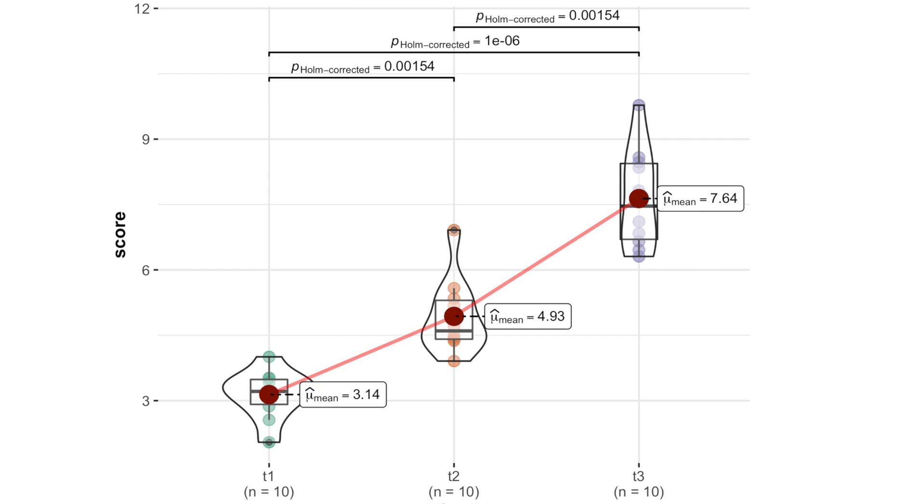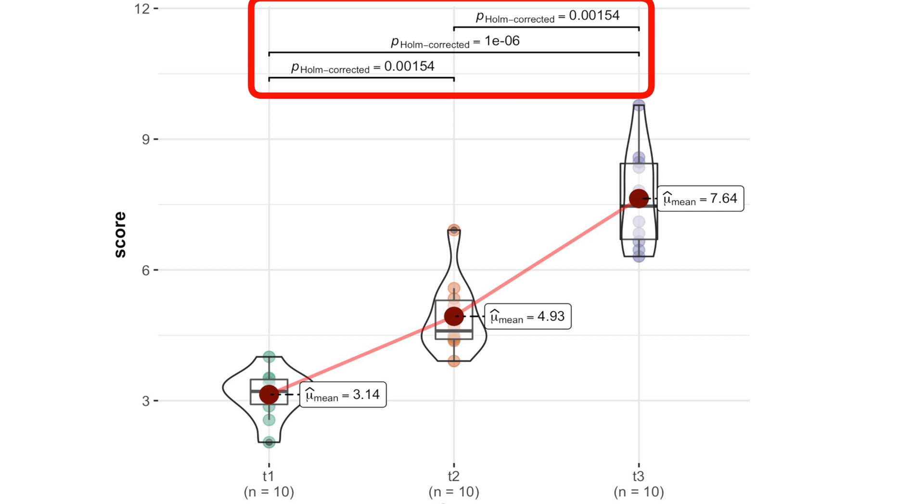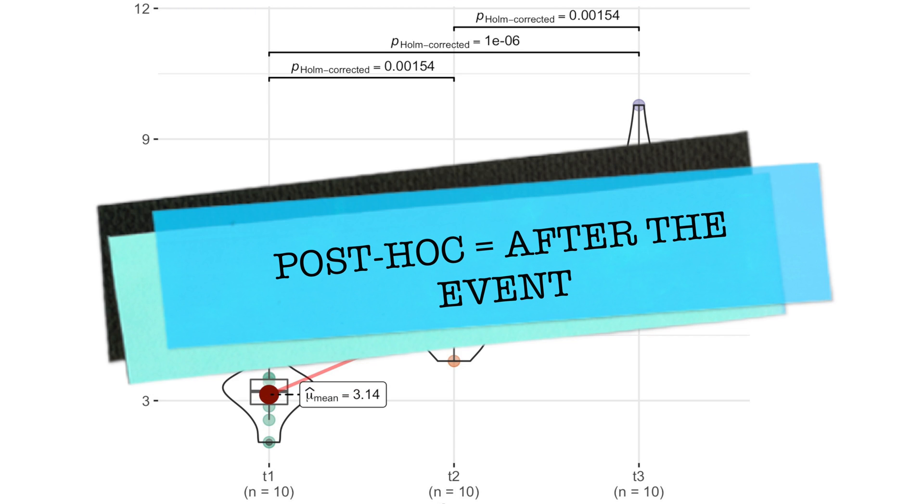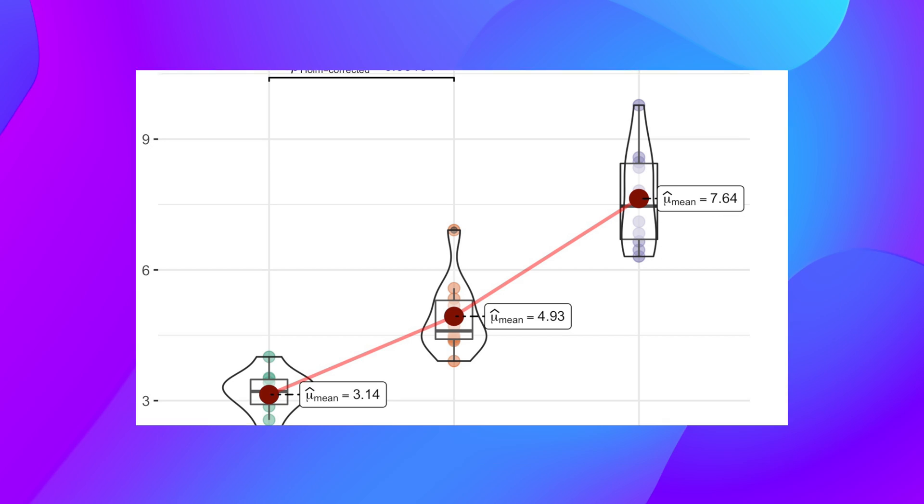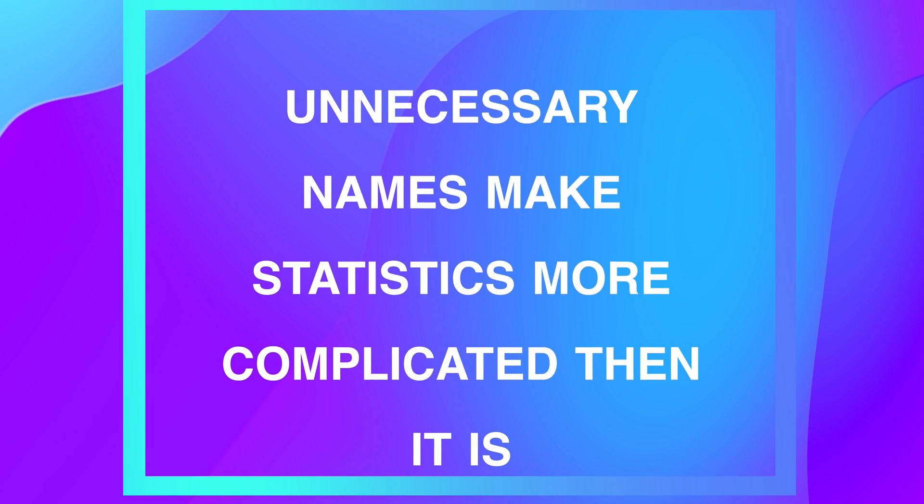By the way, our two global tests are often called with the strange name omnibus test, while the pairwise tests between time points are sometimes described in the dead Latin language as posthoc, which means after the event, in plain English. I really think that those unnecessary names make statistics more complicated than it is.